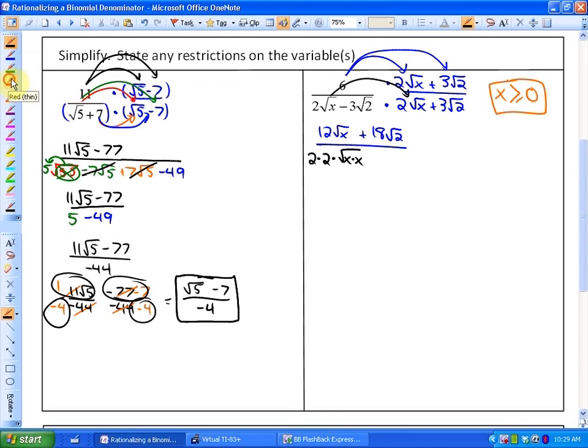My next one would be plus 6 root 2x, and hopefully this next term, which it will be, will be minus 6 root 2x. And my last term here would be negative 9 root 2 times 2, or negative 3 times 3 square root of 2 times 2.